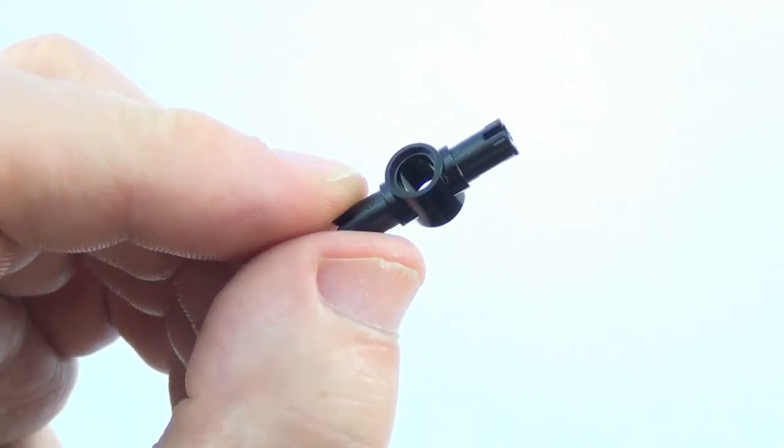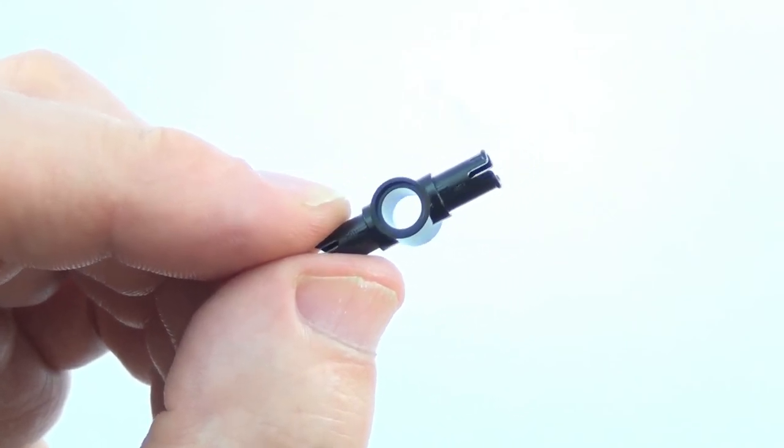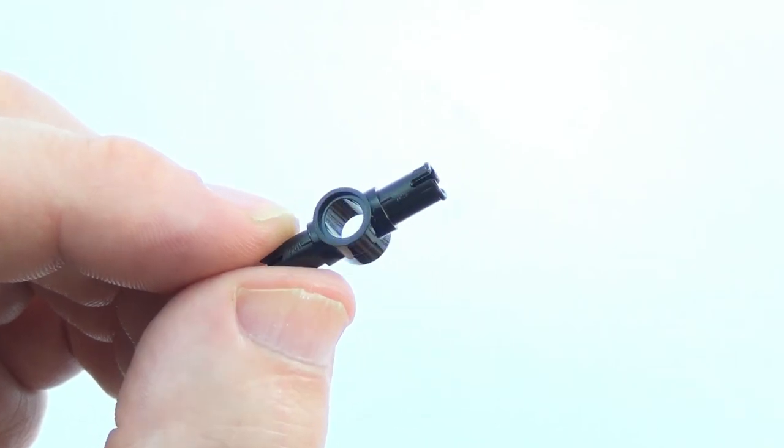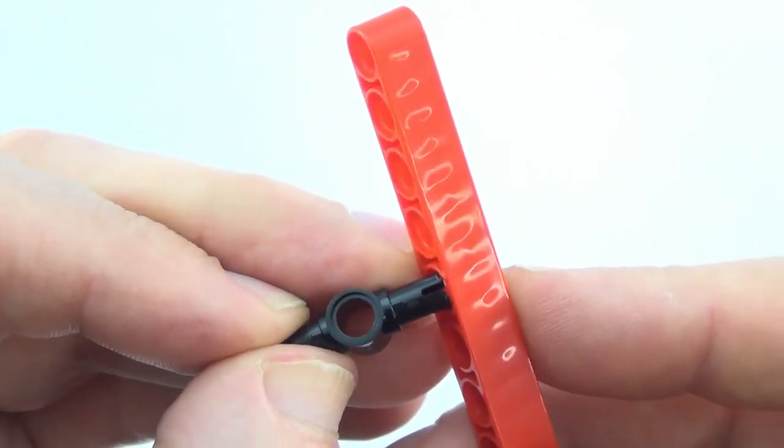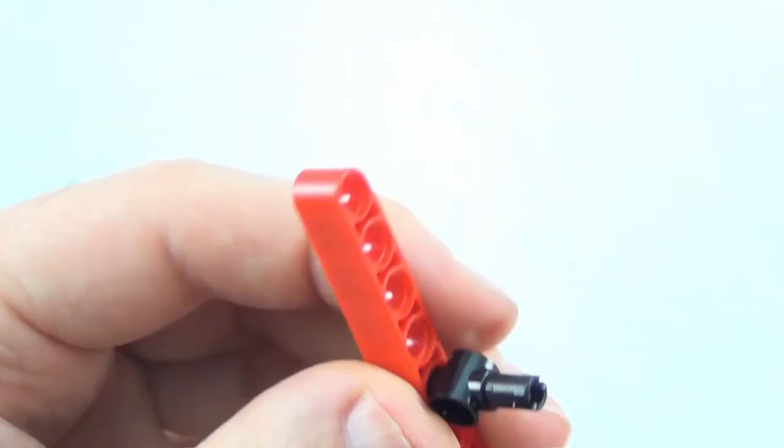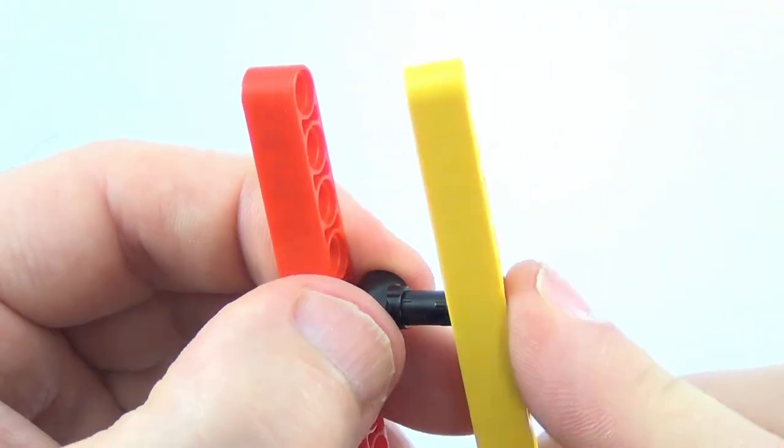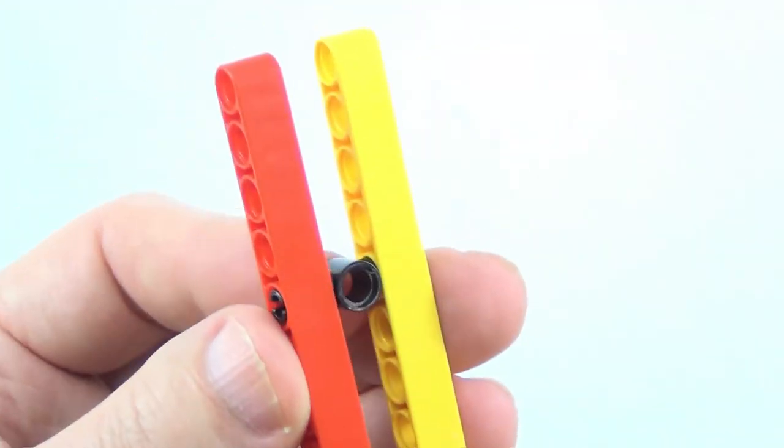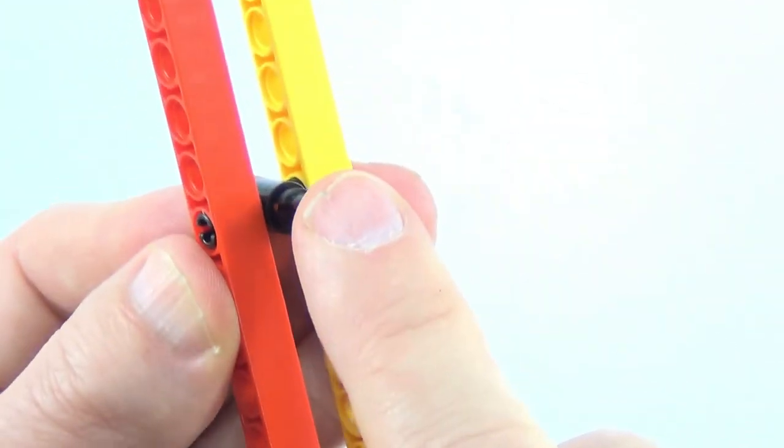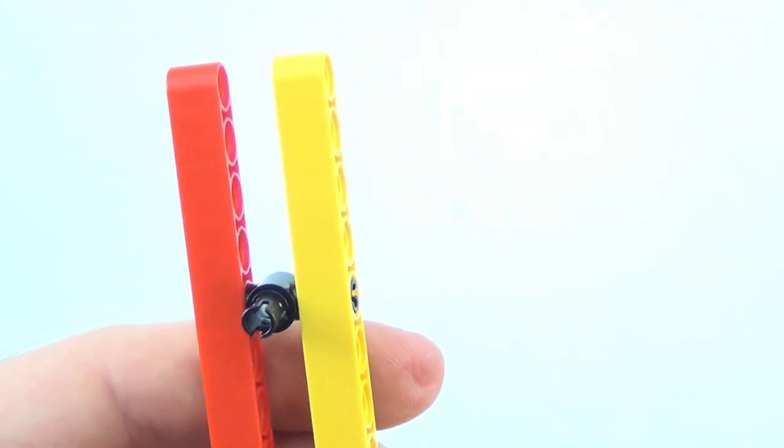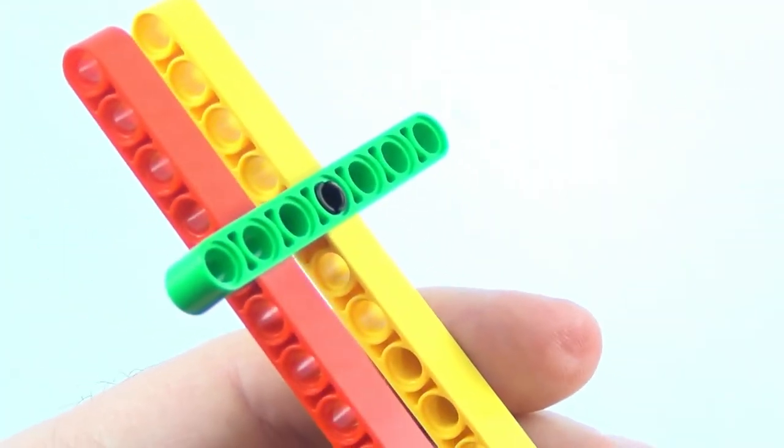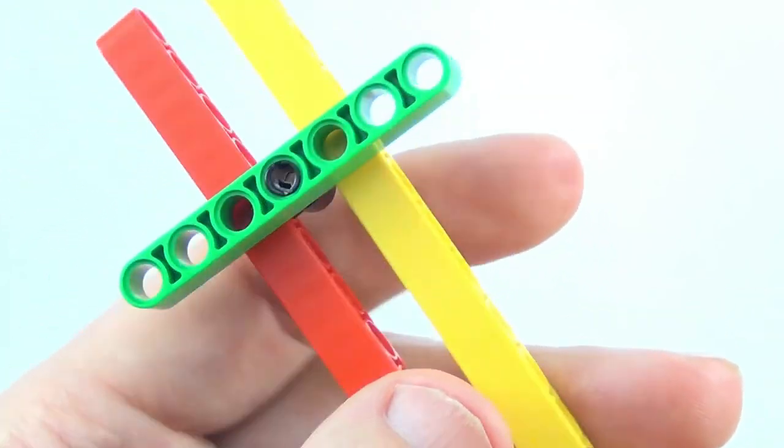Technic pin three long with one hole in the center. Very similar to the previous Technic pin with one hole at one end. Once again, this allows you to add a Technic beam to both ends of the pin, then we may be able to add one Technic pin in the center and maybe go off in a different direction.